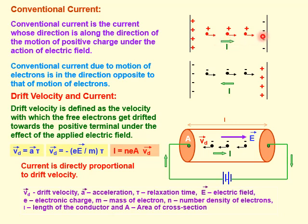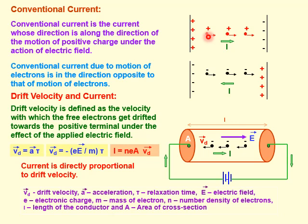If we have a conductor and no battery connected, electrons move randomly with no fixed direction because of thermal energy — they move with thermal velocity, which is very fast, around 10⁴ to 10⁵ meters per second. In the absence of an external electric field, electrons move randomly in any direction, so their average velocity will be zero.